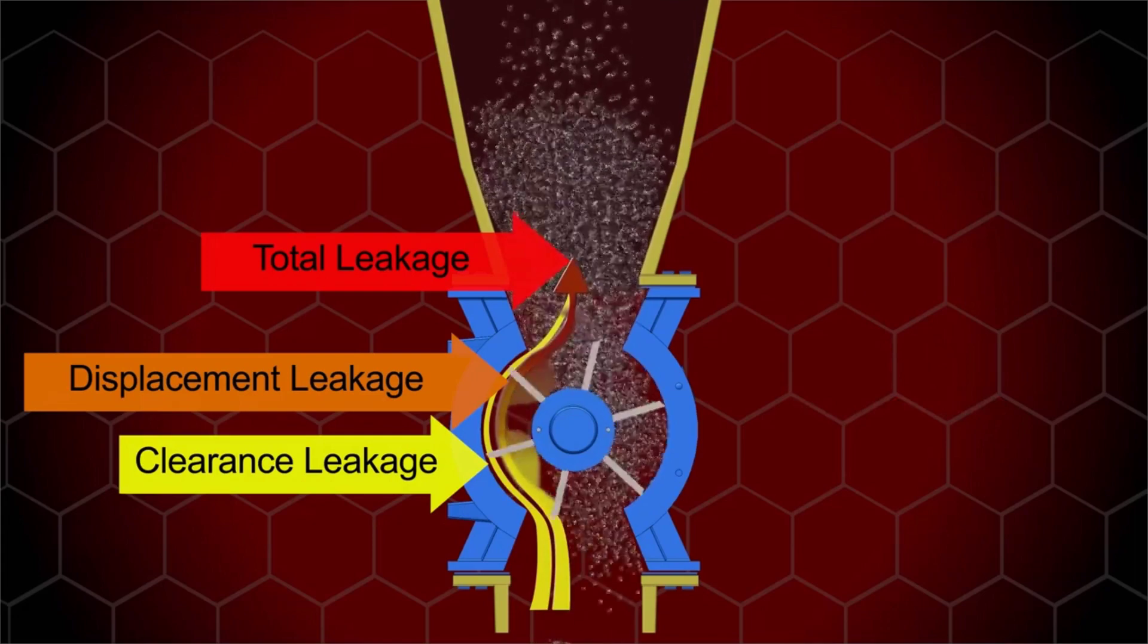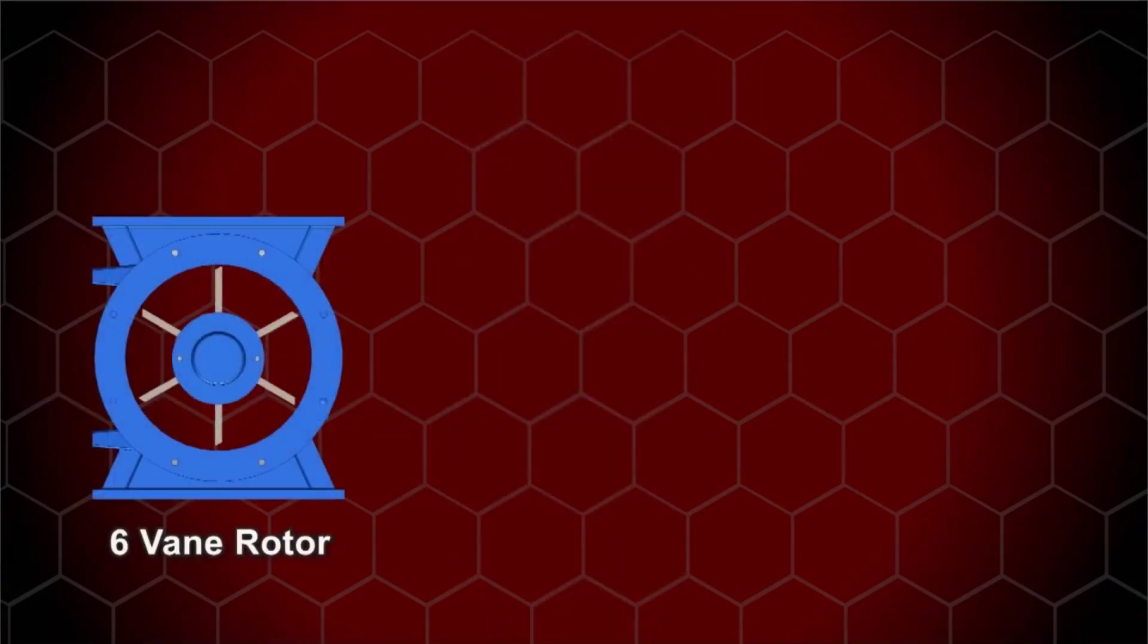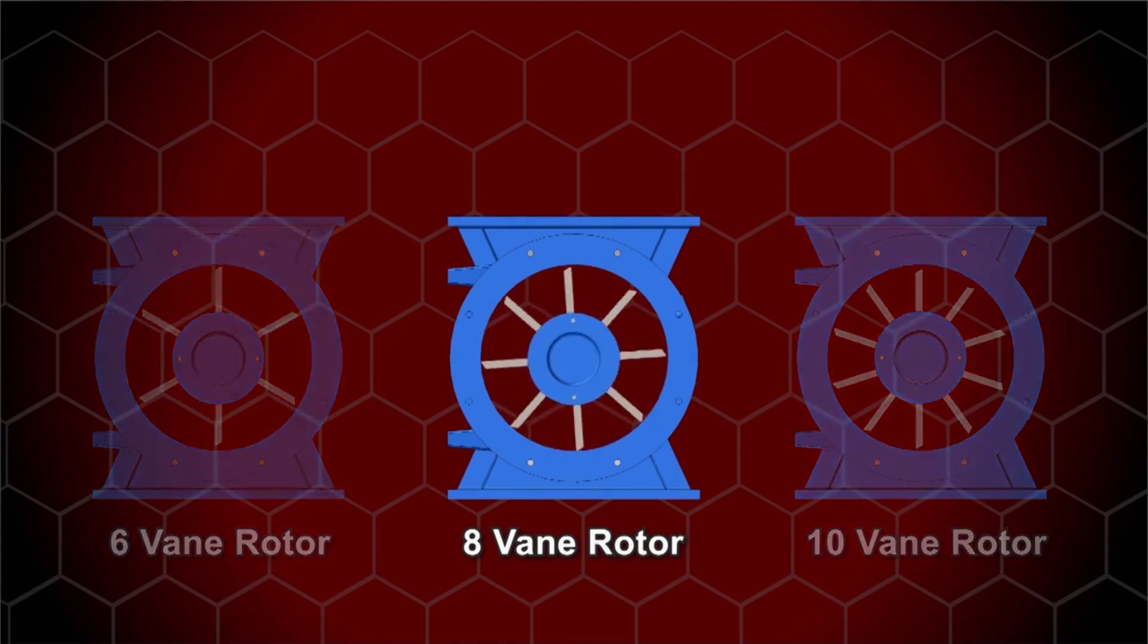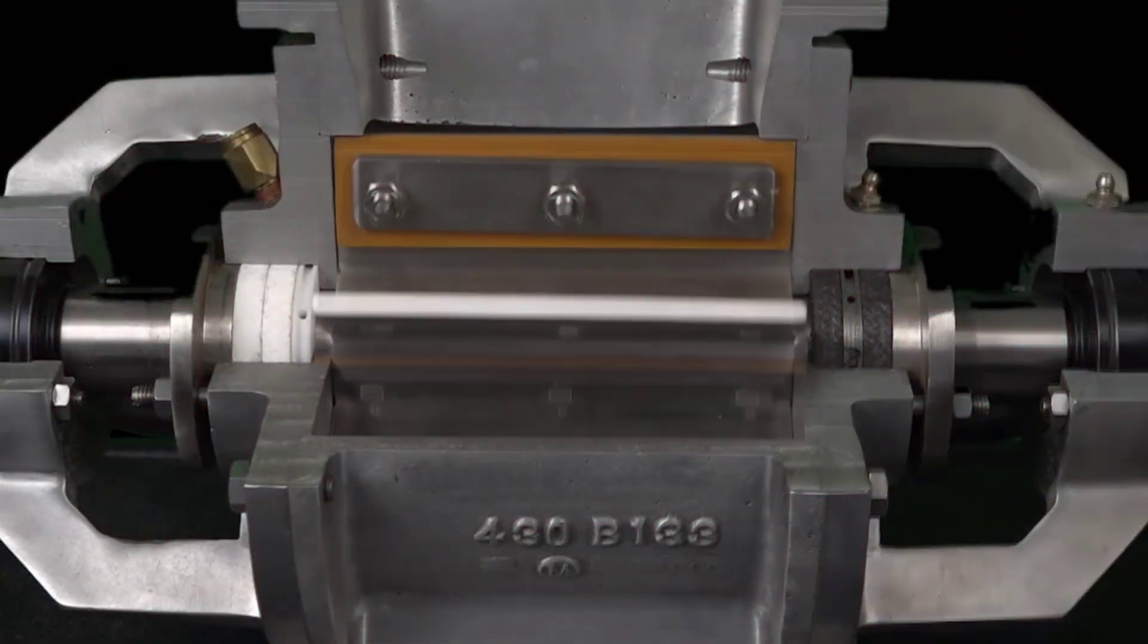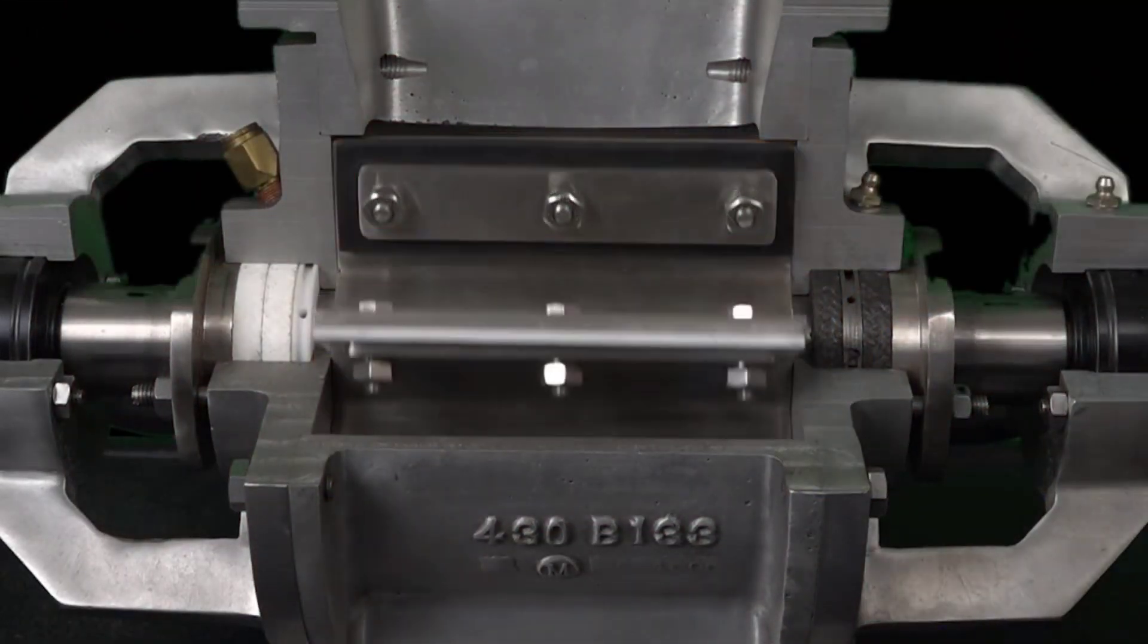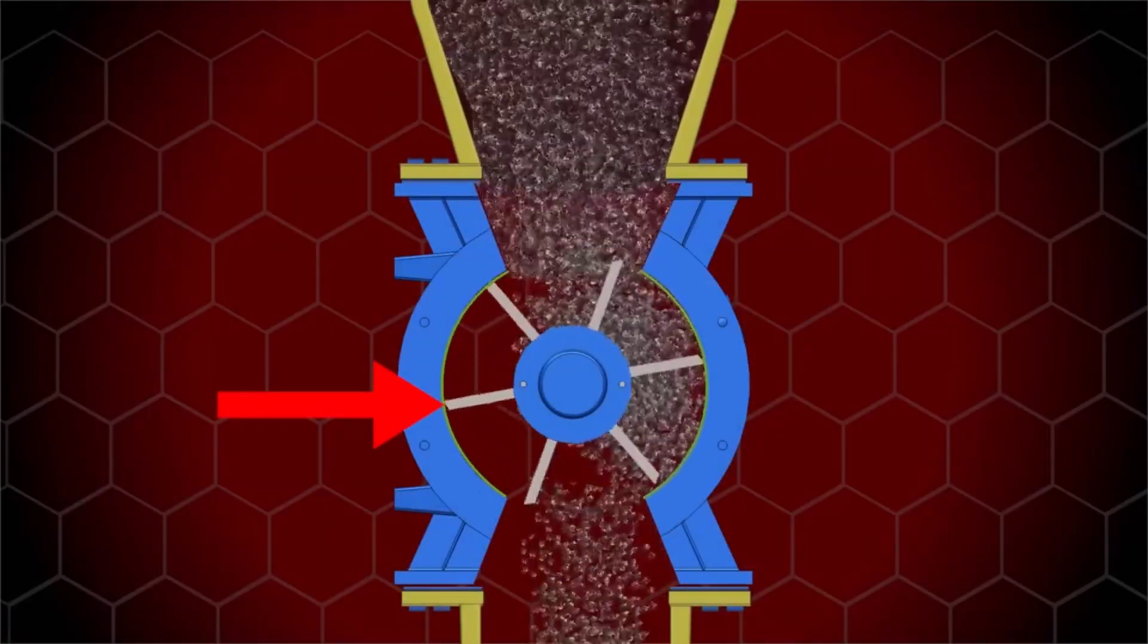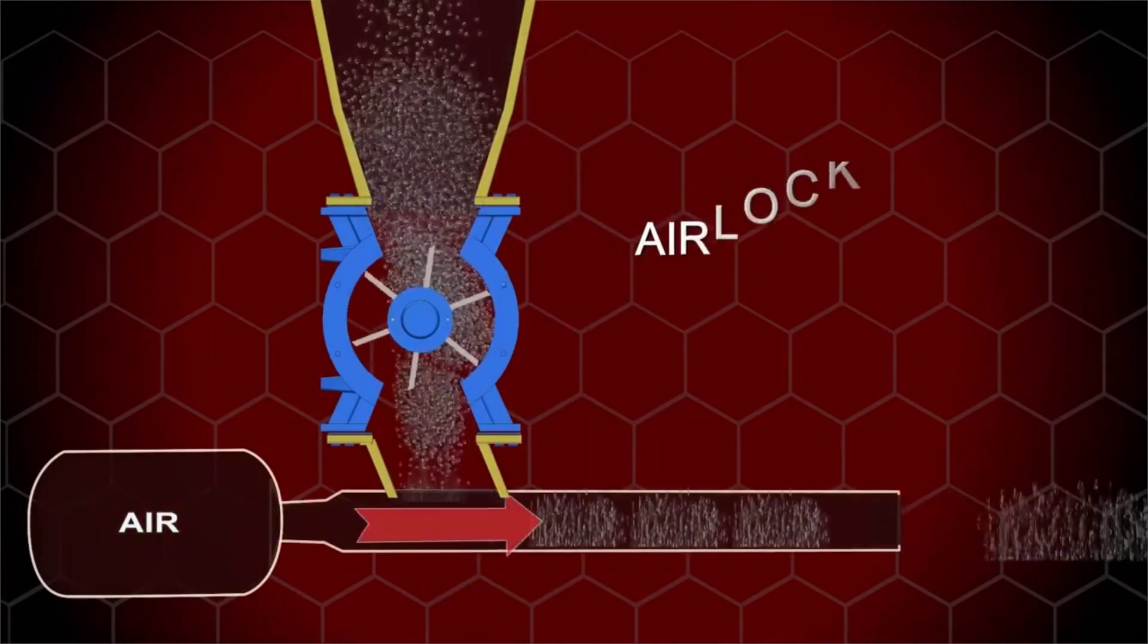Some of the ways to minimize valve leakage include: increase the number of veins on the rotor from six to eight or even ten, install contact type seal strips like polyurethane, neoprene, or teflon, and provide tighter rotor vein clearance. The airlock feeder combines the functionality of a metering feeder and an airlock.